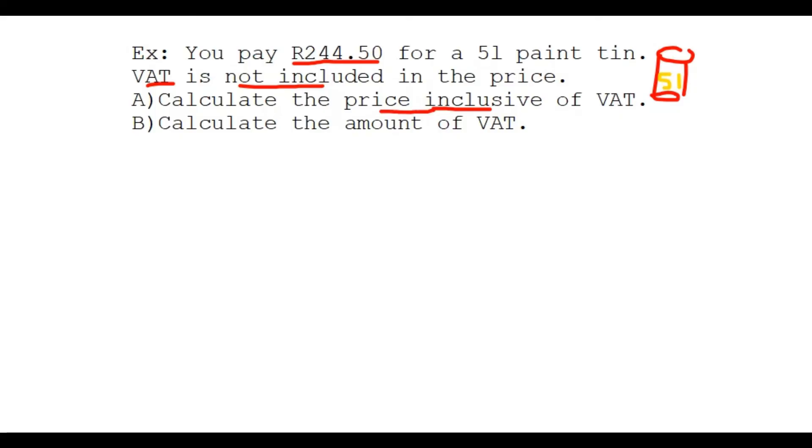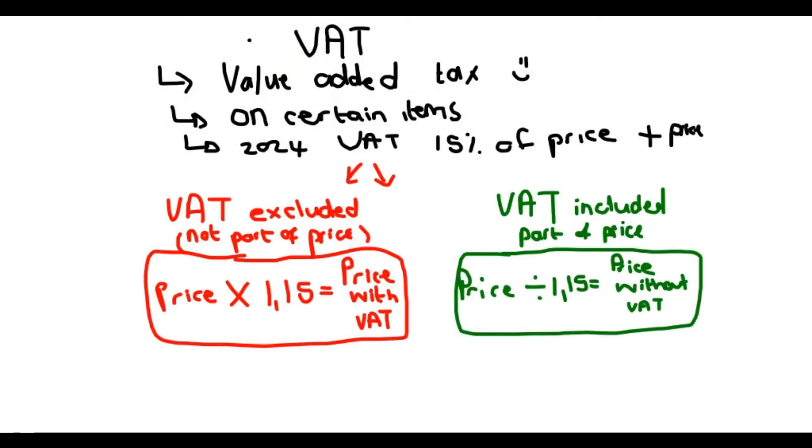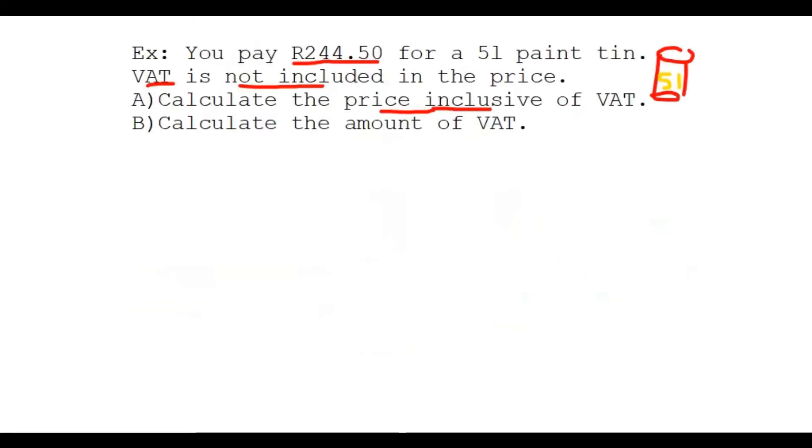Question A is calculate the price inclusive of VAT. Which formula am I going to use? This red one, because I want to know what is the price with VAT. I'm going to say 244 rand 50 cents, my price, times 1.15. Put that in your calculator and you get a new price: R281.18.